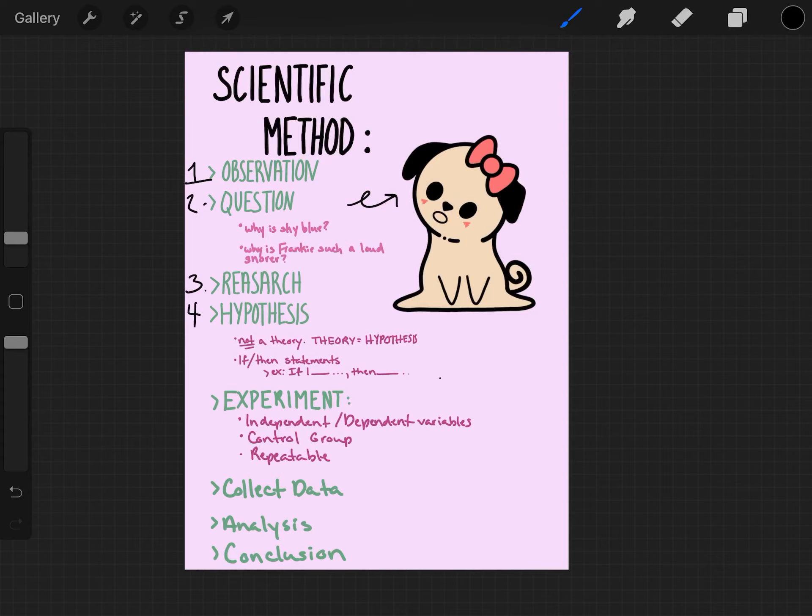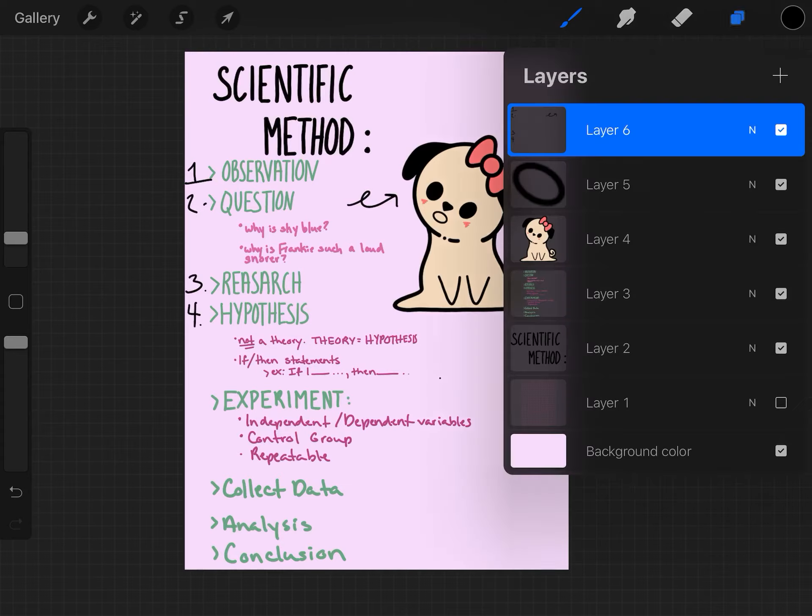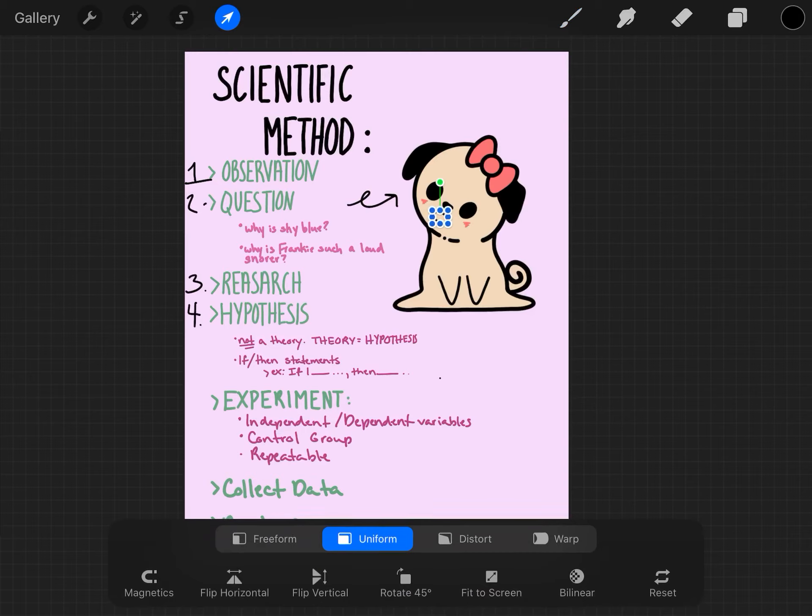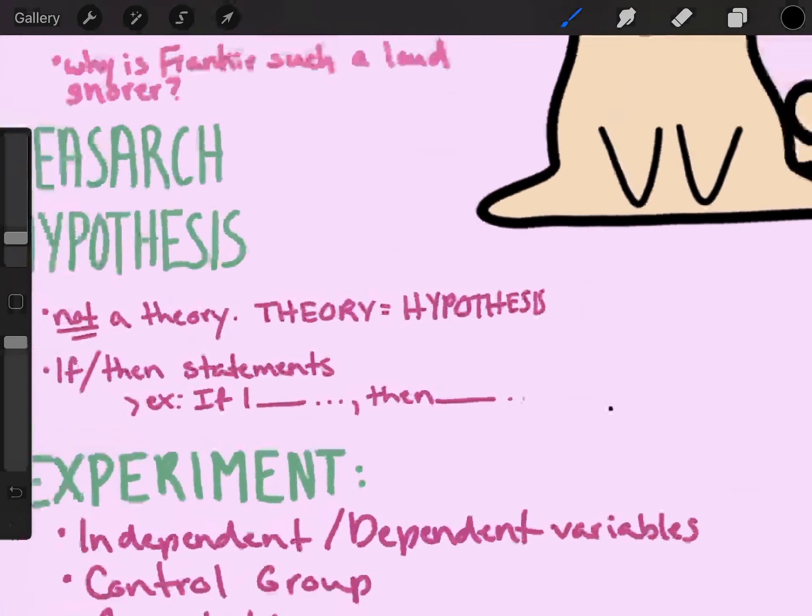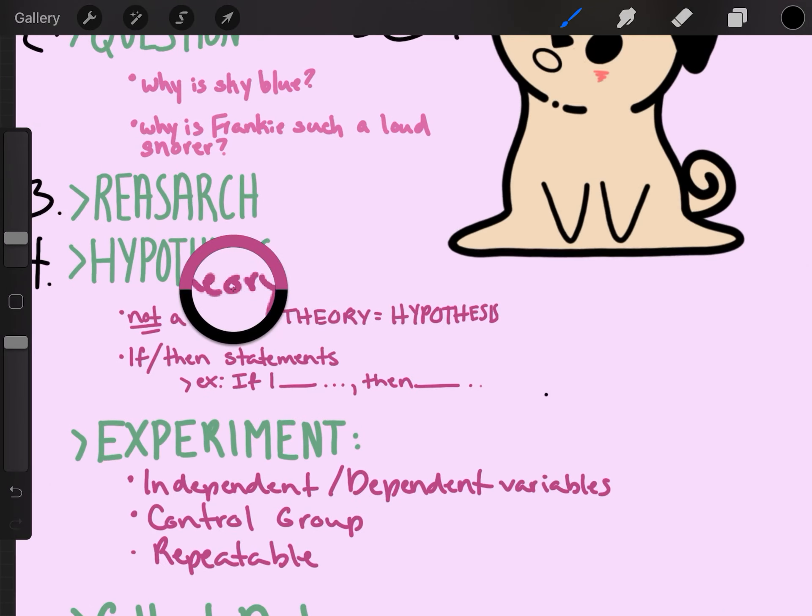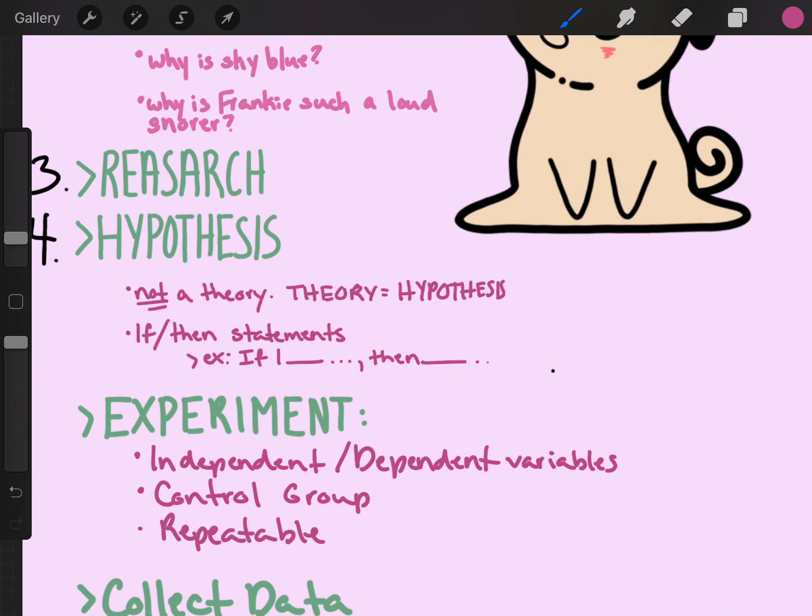From there, scientists have a hypothesis. And now, oh no, here's Pepper and she's like I know what a hypothesis is. It's just a statement, like a theory. No, Pepper, you silly pug, you are wrong. A hypothesis is not a theory.